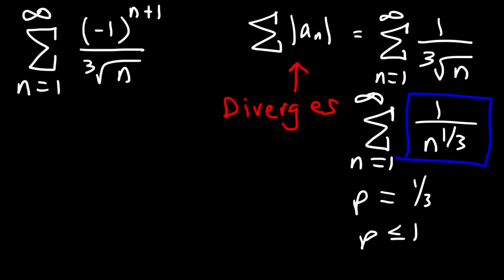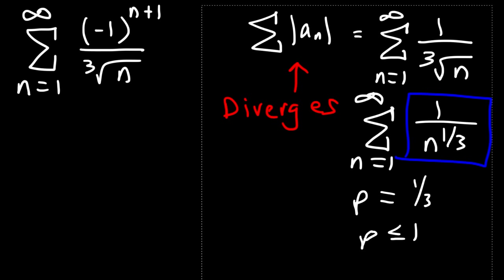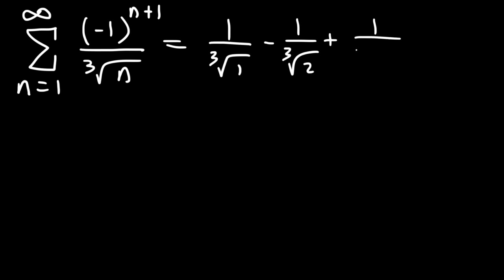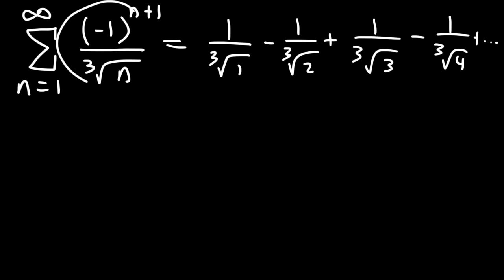Now what about the original series — is it convergent or divergent? Let's write out a few terms. When n = 1, we get (−1)² = 1 divided by the cube root of 1. When n = 2, it's −1 over the cube root of 2, then +1 divided by the cube root of 3, then −1 over the cube root of 4, and so forth. Notice that we have an alternating series, so to analyze this we need to use the alternating series test.